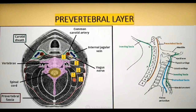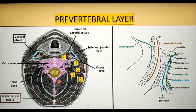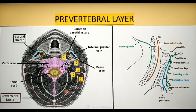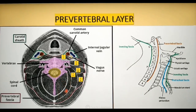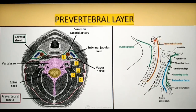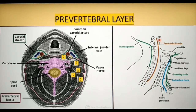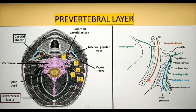The second group is the scalene muscles, which include the anterior, middle, and posterior scalenes as well as the levator scapulae, located laterally to the vertebrae. And posteriorly, the deep or intrinsic muscles of the back are located. The sagittal section shows the prevertebral fascia attached superiorly to the skull base and inferiorly extending to the superficial mediastinum, attached to the body of the fourth thoracic vertebra.